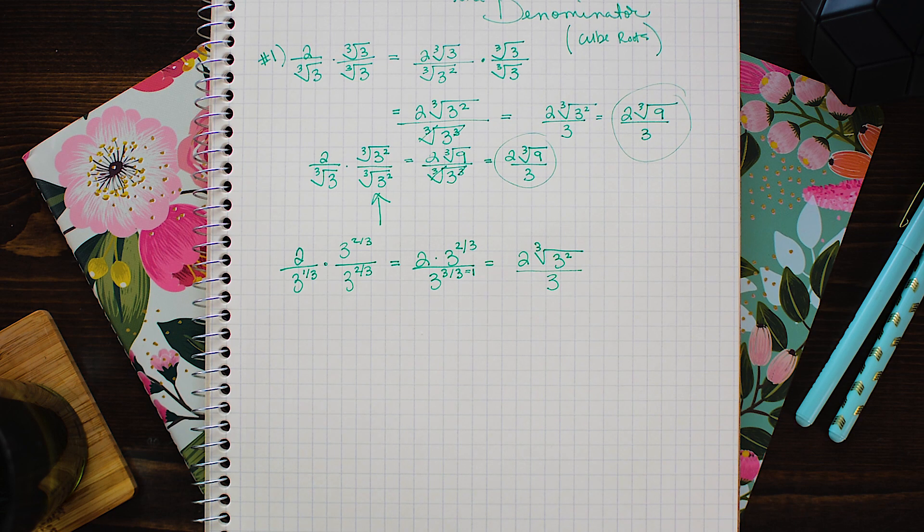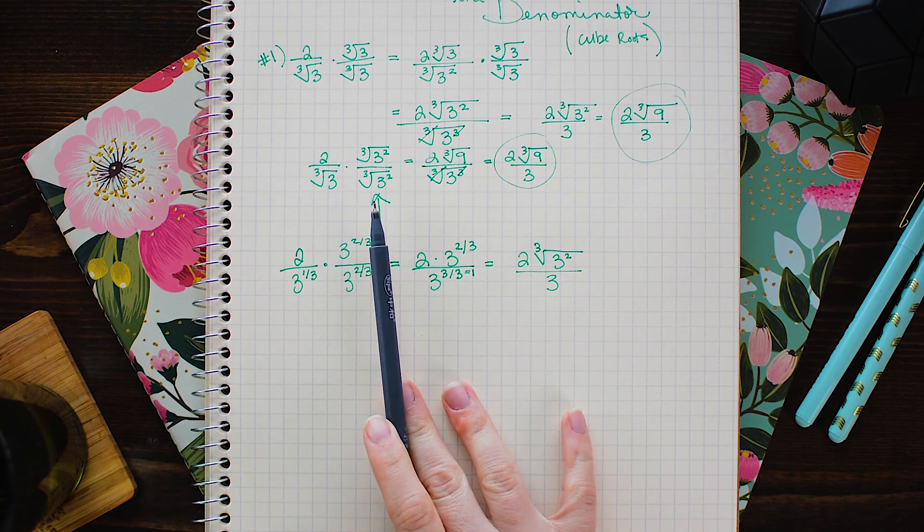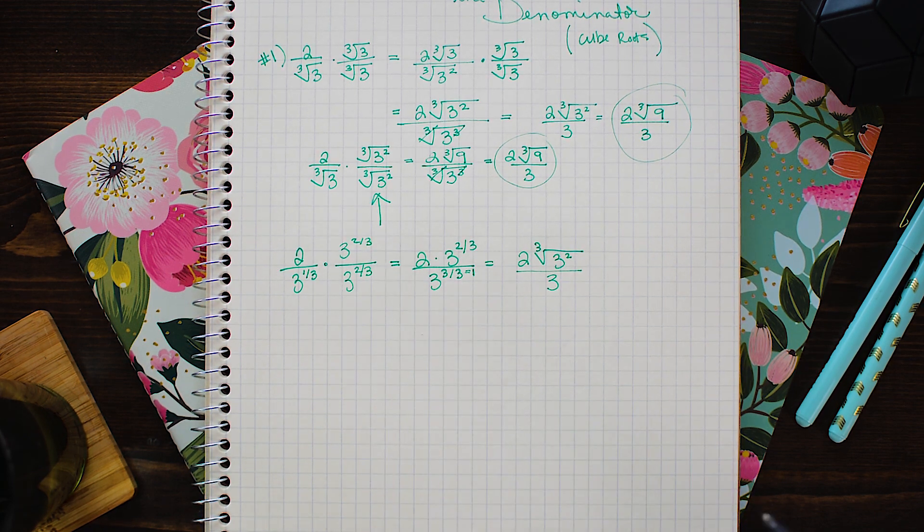As you can see it's actually I think a cleaner method to use the fractional exponents instead of the radical notation. I know working with fractions usually isn't ideal but in this situation it's really handy.